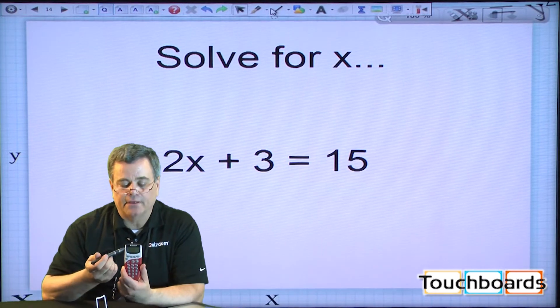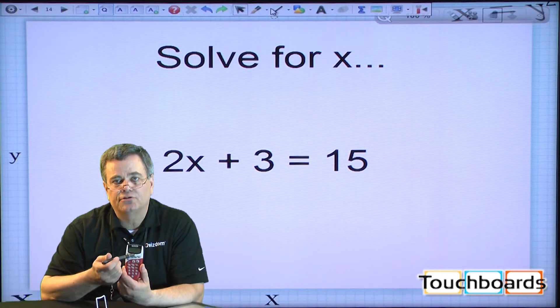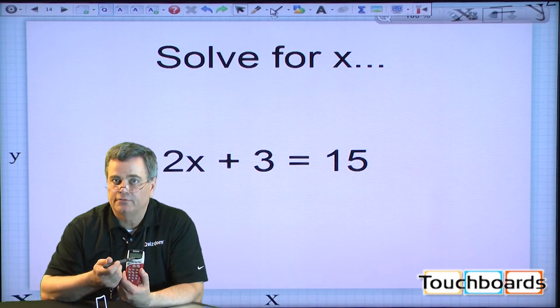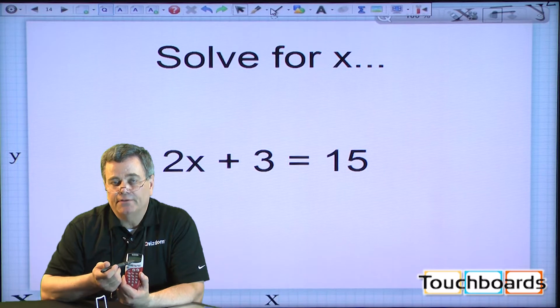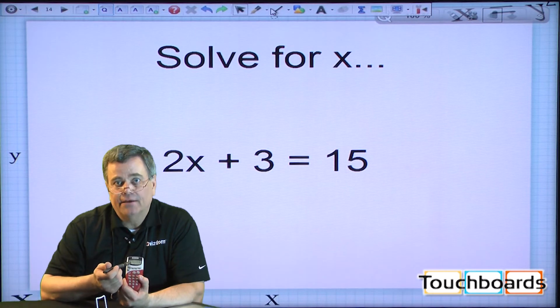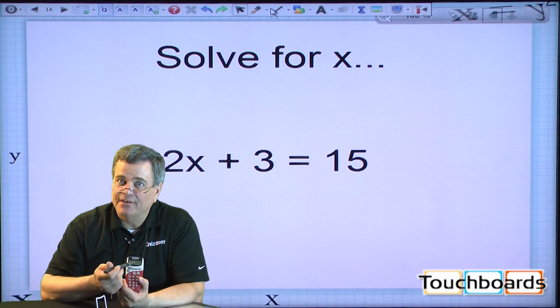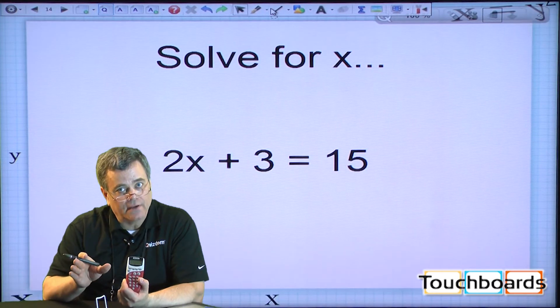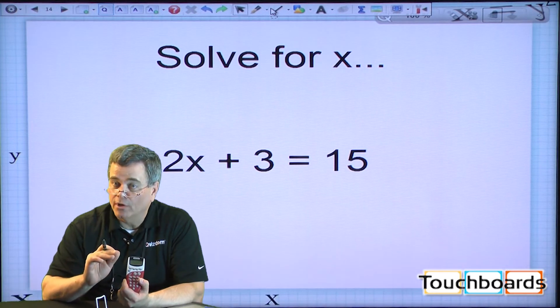Now, the feedback that you can send to the students, you can either enable or disable. If you enable it, they'll either get a check for a right answer or an X for a wrong answer. If it is disabled, they'll get a check and an X. That way, they know you got the answer, but you're not going to tell them whether it's right or wrong.